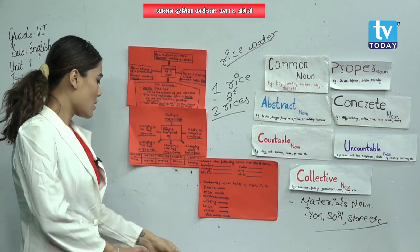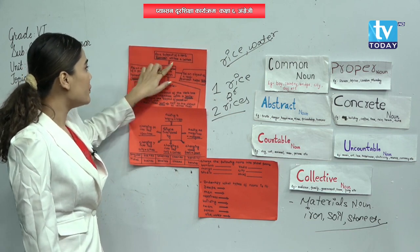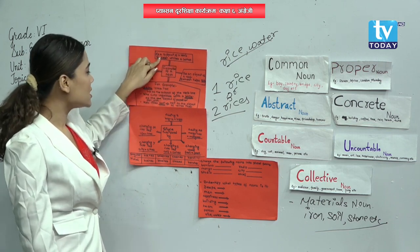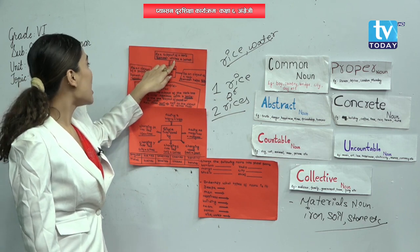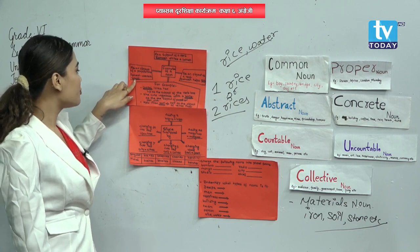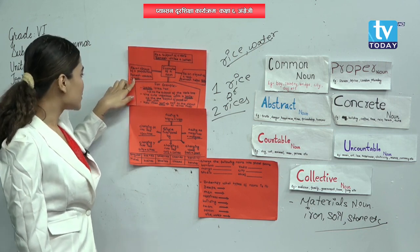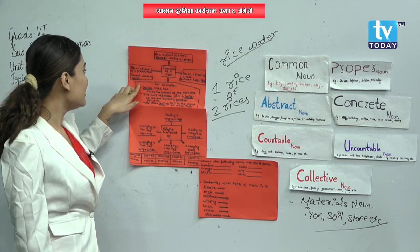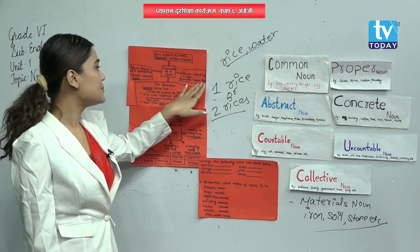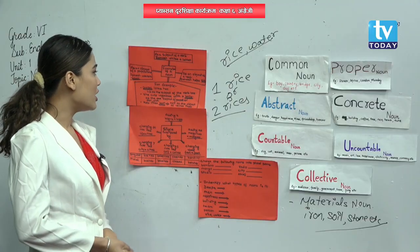'Romes writes a letter' — Romes as the subject of the verb 'writes.' 'Romes went to school' — school as the object of preposition 'to.' 'Romes helps Sita' — Sita as the object of verb 'helps.' Understood?